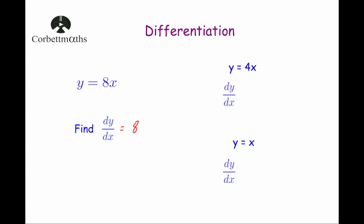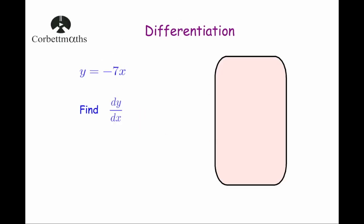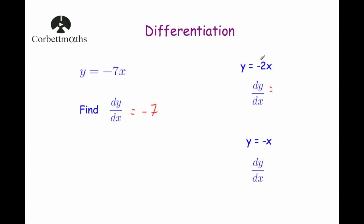Likewise, if we were given y equals 4x, the gradient is just 4, so dy by dx equals 4. If we were given y equals x — remember that's 1x — the gradient is always 1, so dy by dx equals 1. So if you're given a number times x and you differentiate it, you just get that number. If the number is negative — for example y equals minus 7x — the gradient is always minus 7, so dy by dx equals minus 7. Similarly, y equals minus 2x gives dy by dx equals minus 2, and y equals minus x gives minus 1.